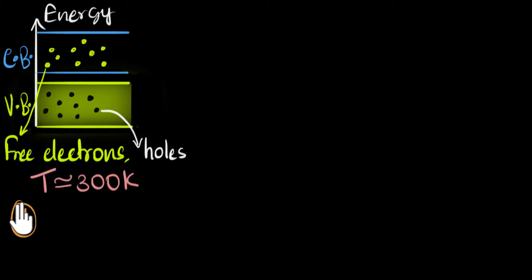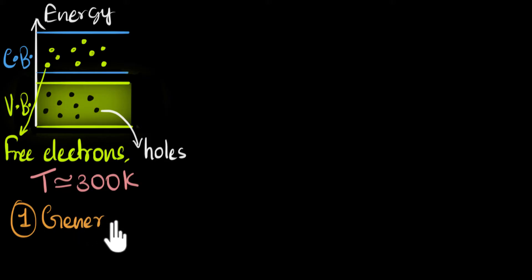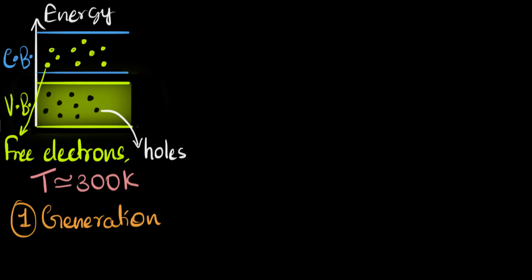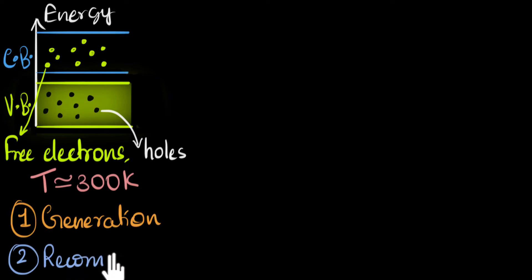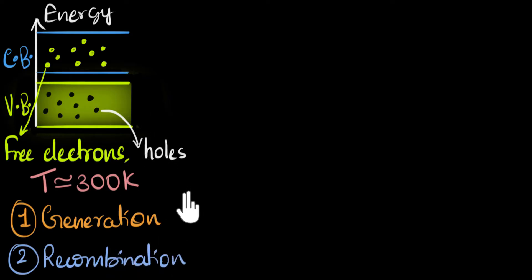One of them is called generation, or thermal generation. The second one is called recombination. These two processes will be the key to understanding everything in semiconductors later on.